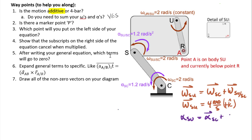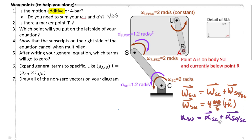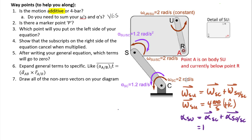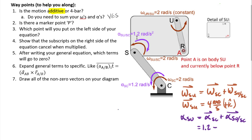Now for alpha: alpha of SU equals alpha of SC plus the relative alpha of SU relative to SC — noting that the subscripts cancel, just as in more complex equations. SC is positive at 1.2 rad/s², and the relative alpha of SU relative to SC is negative 1.2 rad/s². So 1.2 minus 1.2 equals zero: our alpha of SU has zero angular acceleration.